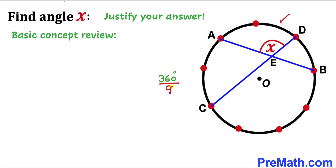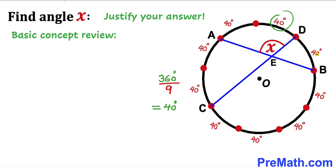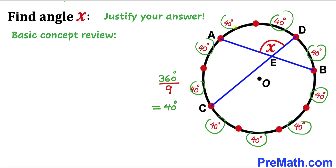360 divided by nine is going to give us 40 degrees. So therefore all these arc segments are 40 degrees each across the board.